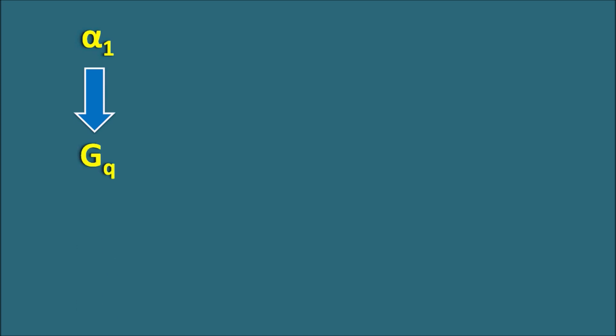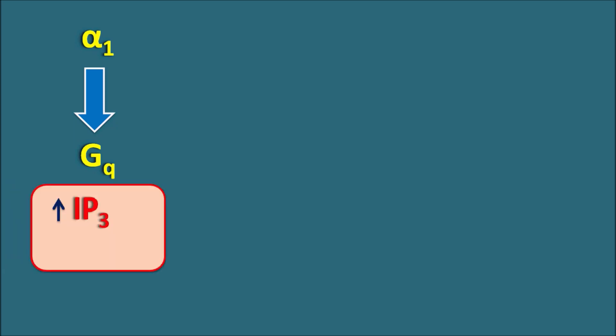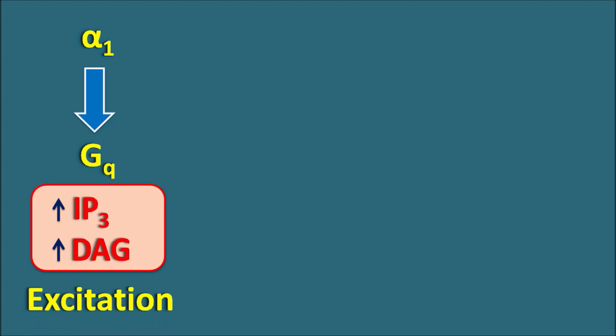Alpha-1 receptors are one type of G-protein coupled receptors classified as GQ, or they can also be called G-alpha Q. These receptors are coupled with elevated levels of inositol triphosphate (IP3) and diacylglycerol. When these receptors are activated, IP3 and diacylglycerol levels are going to be increased within the postsynaptic membrane. This results in excitation.